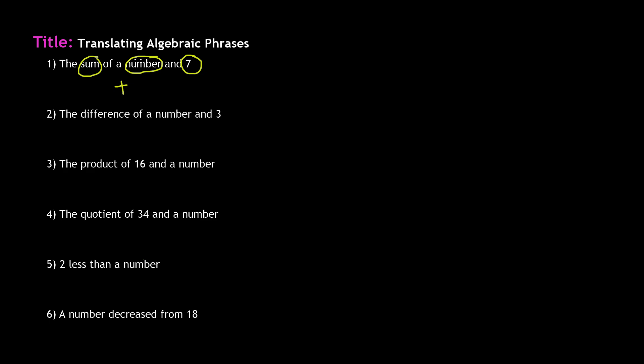A number is an unknown value, so we're going to use a variable. A variable is used to substitute for an unknown value. A variable is a lowercase letter you use to substitute an unknown value — you could use any letter from the alphabet, but in most cases people use x or n. I'll be using x. So x plus, and now we need our last term, which is seven. So x plus seven, and you are done. To translate 'the sum of a number and seven,' we write x plus seven.